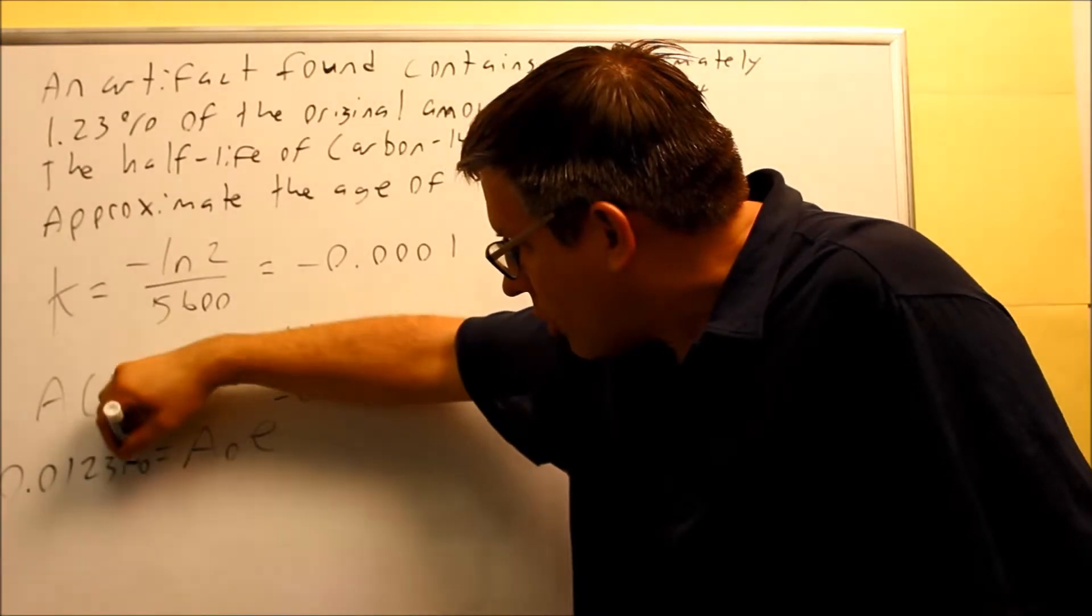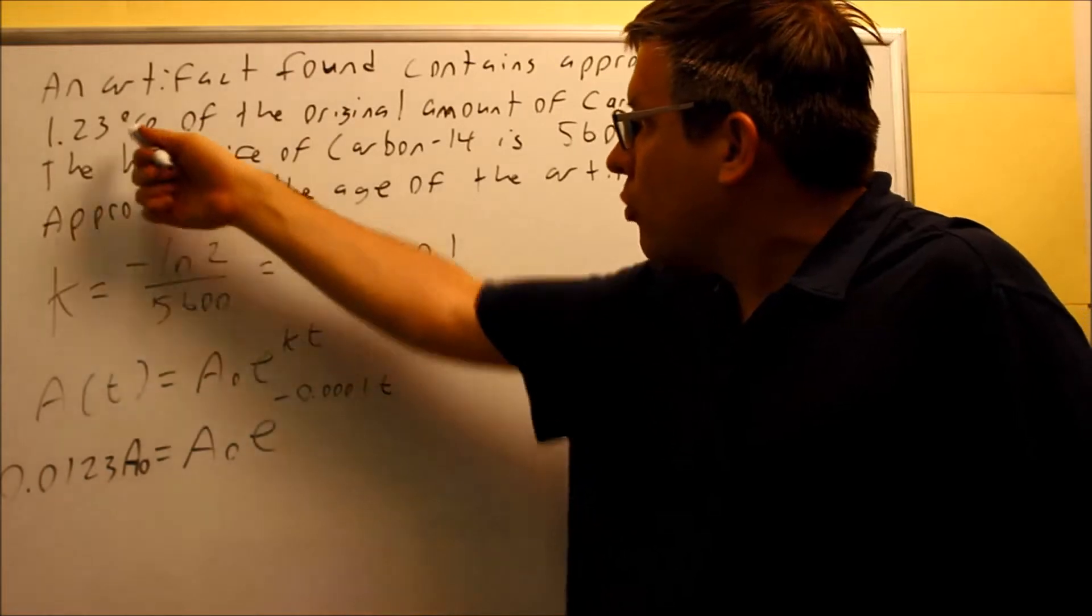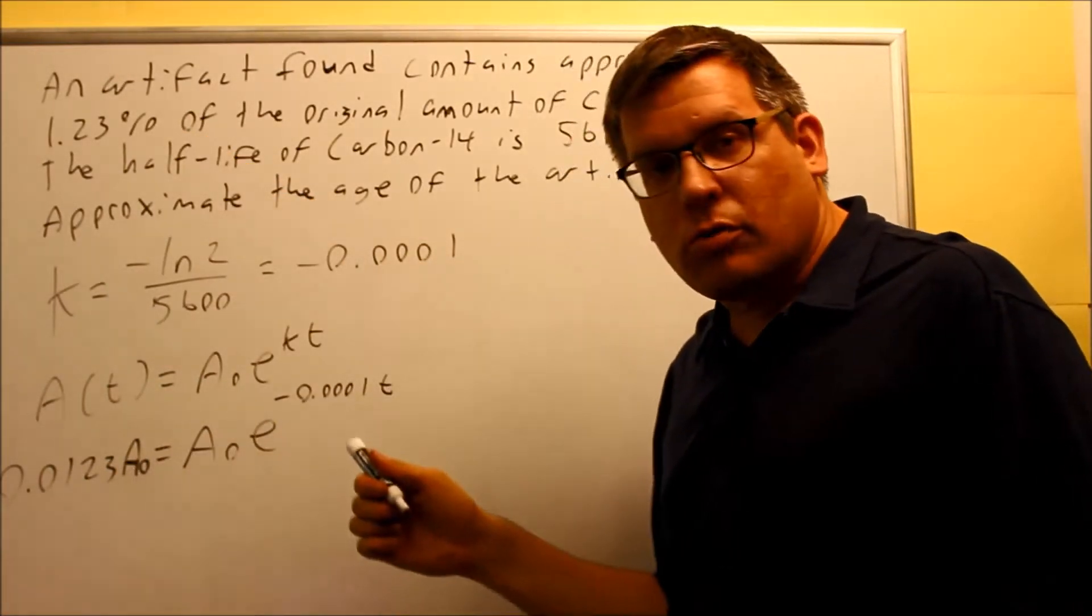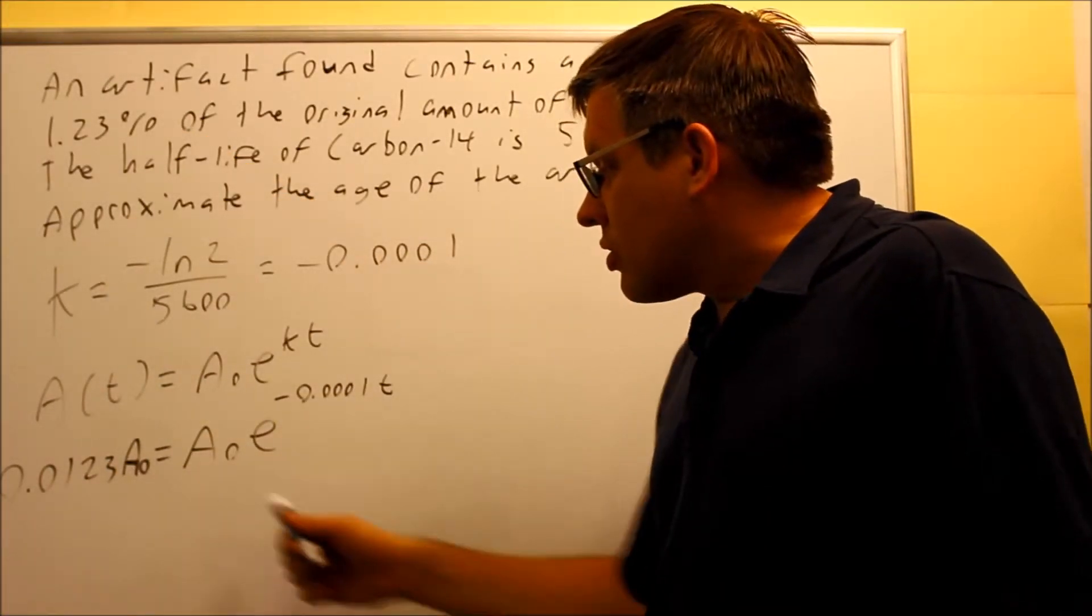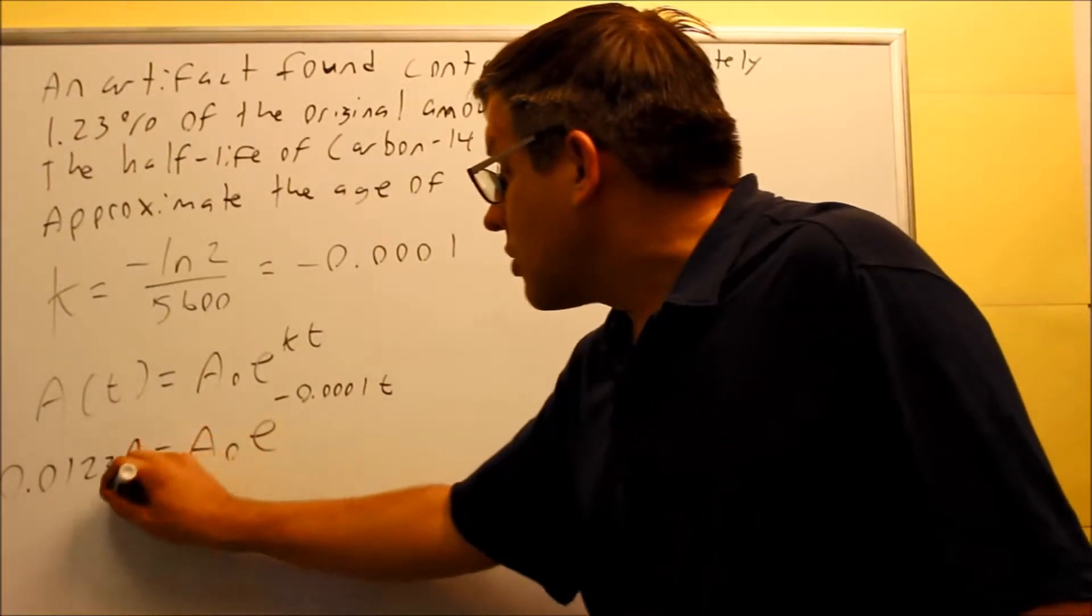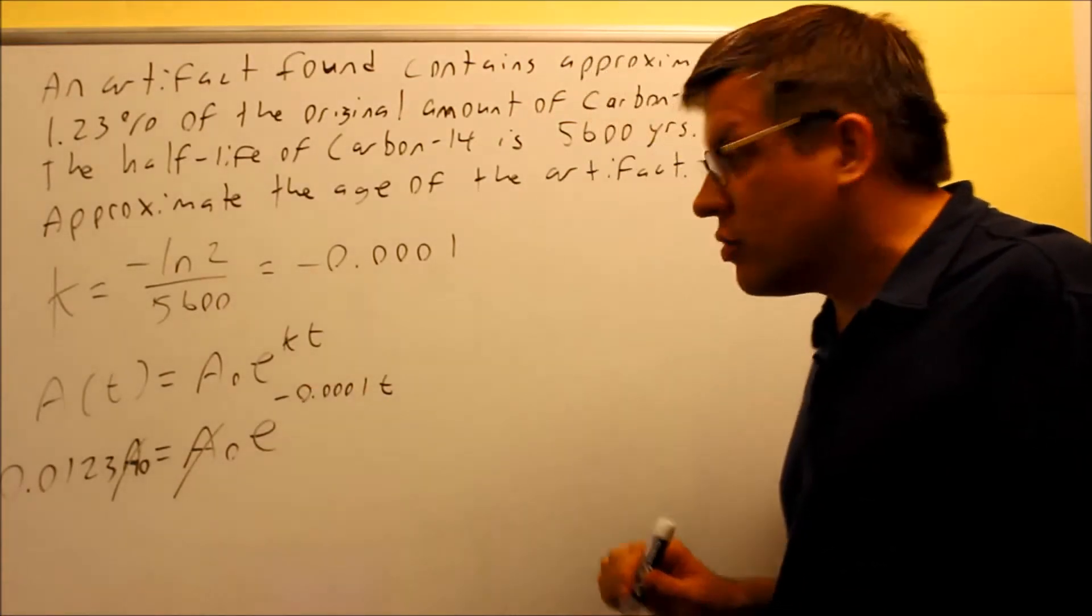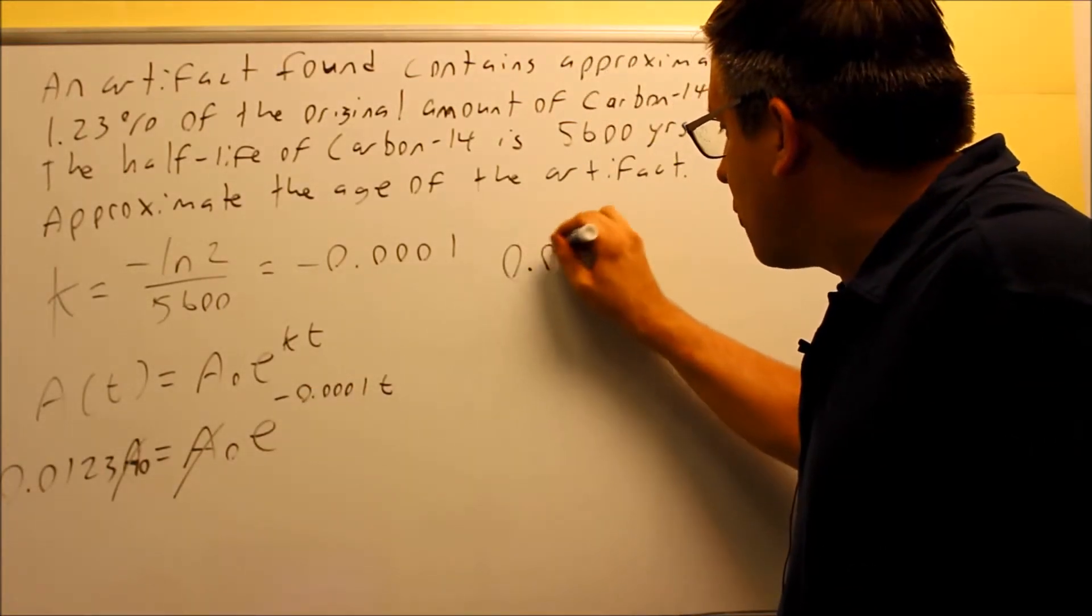We don't know what the original amount is, but what I am told is that my current amount is going to be 1.23% of the original amount, and I have that here. So I have A₀ on both sides from the way I set this up, so you're allowed to cancel both those out. That would be a constant, we'll drop both those.